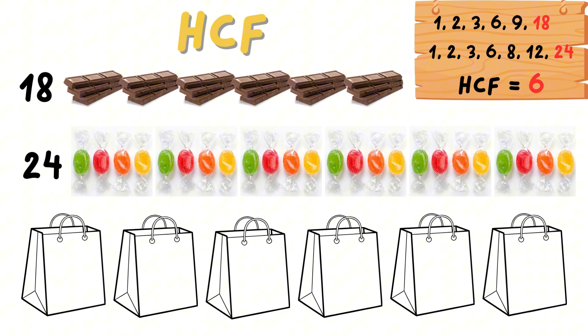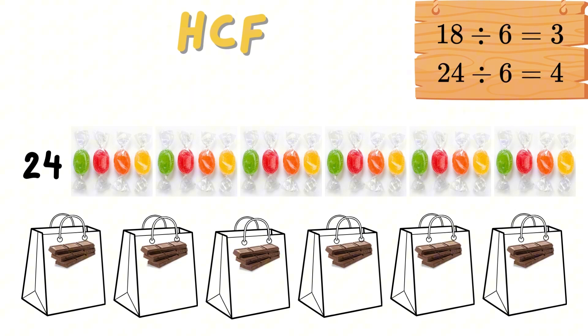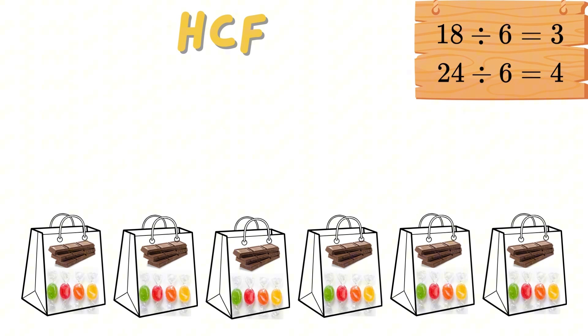Now let's work out how many chocolates and sweets go in each bag. 18 chocolates shared between 6 bags equal to 3 chocolates per bag. 24 sweets shared between 6 bags equal to 4 sweets per bag. So each bag will have 3 chocolates and 4 sweets.